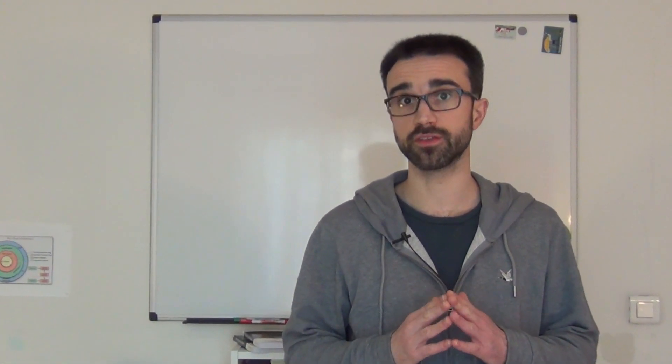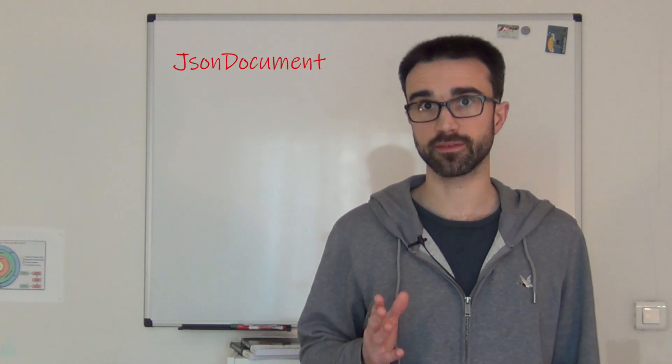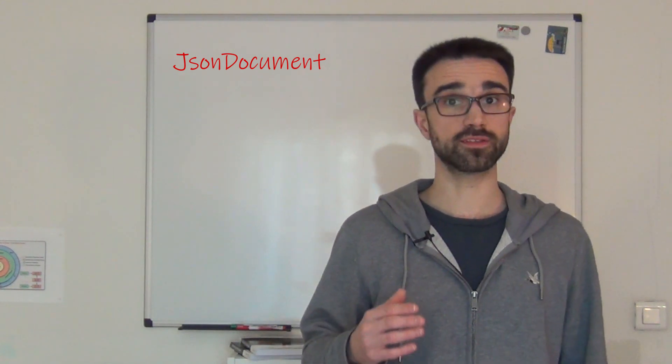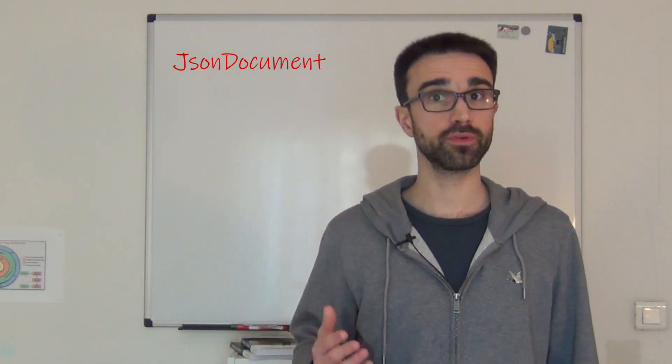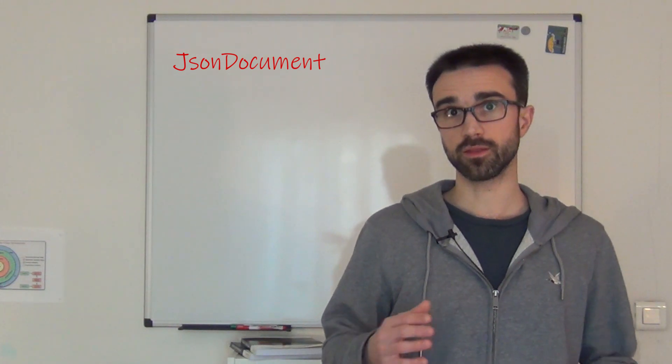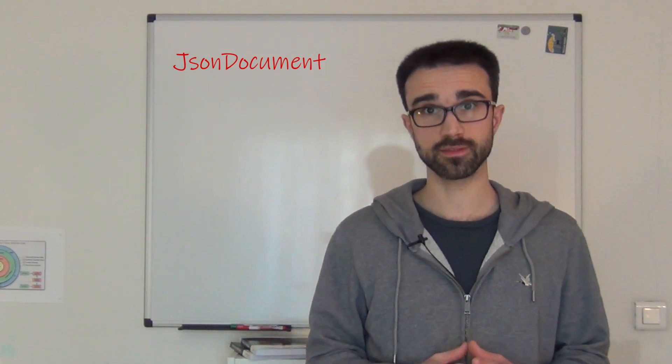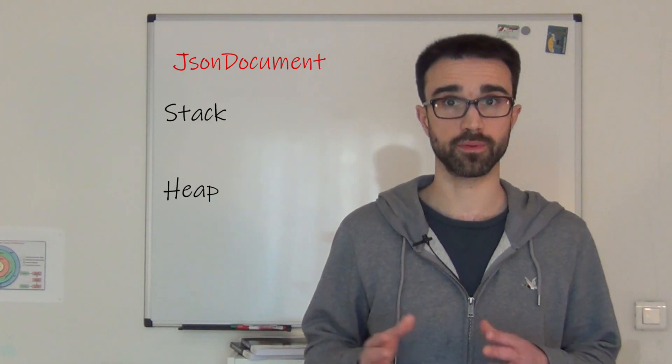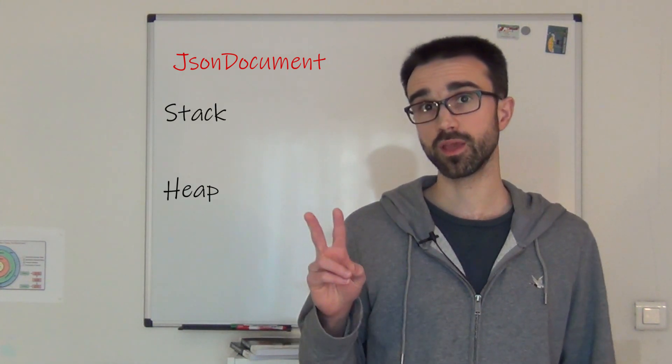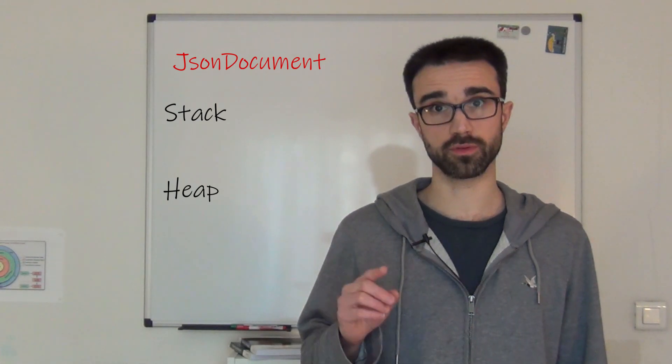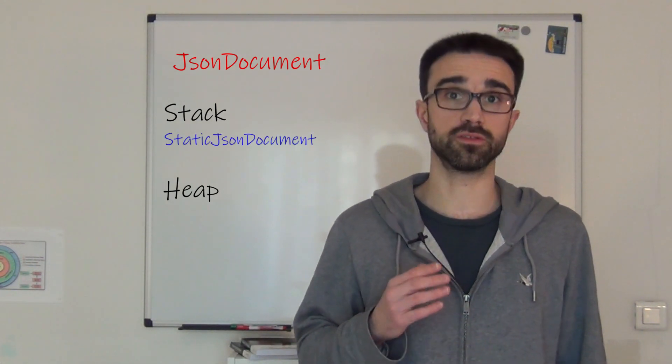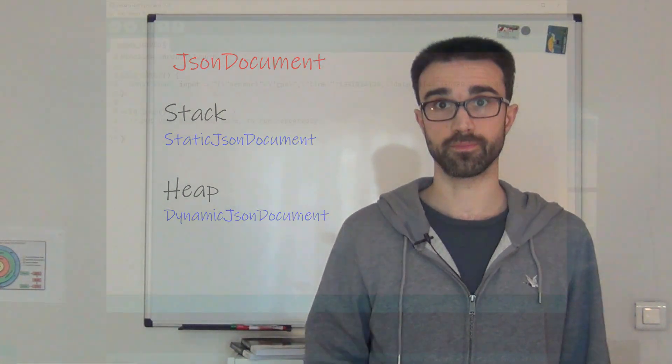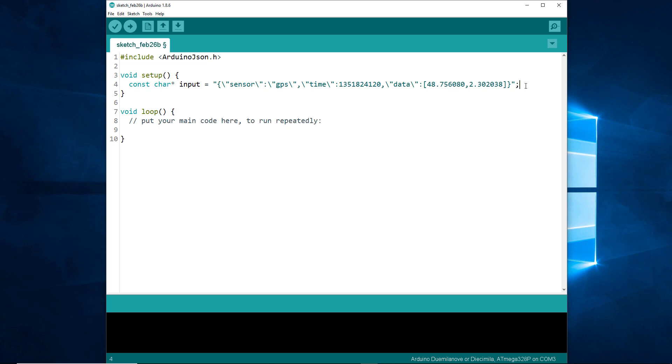Now, we'll see the cornerstone of Arduino JSON, the JSON document class. We'll create an instance of JSON document that will store the memory representation of our input. The JSON document class contains a memory pool that can be either on the stack or in the heap. There are two implementations of JSON document: Static JSON document that uses the stack, and dynamic JSON document that uses the heap. In this tutorial, we'll use a static JSON document.